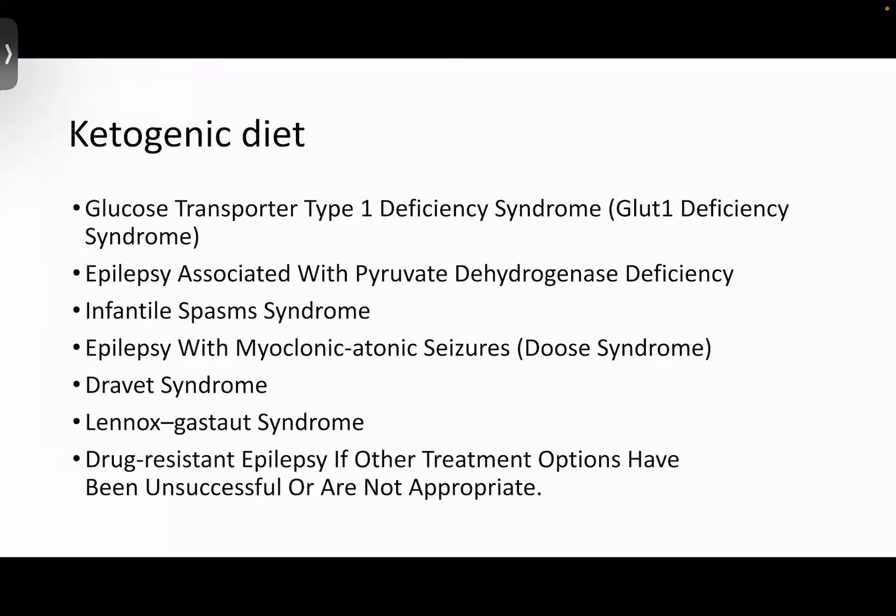Coming to ketogenic diet: patients with epilepsy and underlying GLUT1 deficiency, and certain epilepsy associated with pyruvate dehydrogenase deficiency, we can try ketogenic diet. Infantile spasms syndromes, epilepsy with myoclonic-atonic seizures (Doose syndrome), Dravet syndrome, Lennox-Gastaut syndrome, and in drug-resistant epilepsy, if other treatment options have been unsuccessful or are not appropriate, then we can try ketogenic diet.